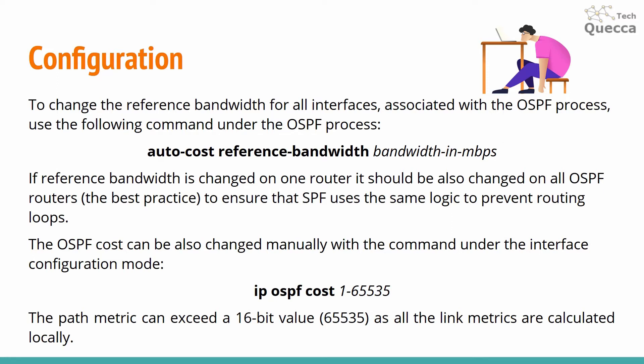The OSPF cost can also be changed manually with the command under interface configuration mode: ip ospf cost, followed by a value from 1 to 65535. The path metric can exceed a 16-bit value as all the link metrics are calculated locally.